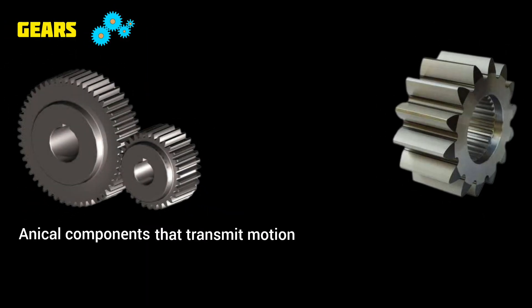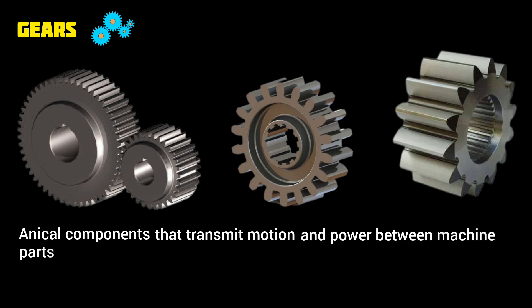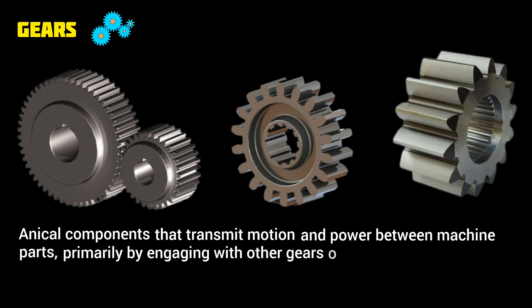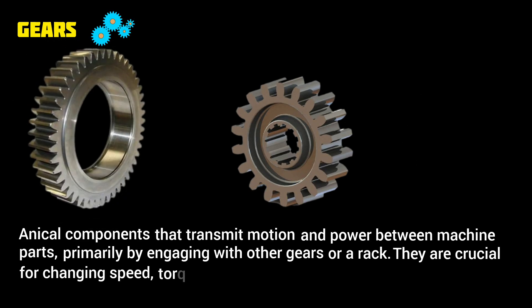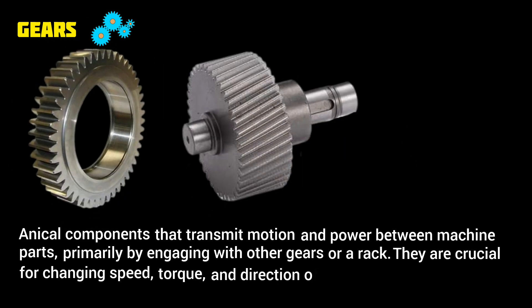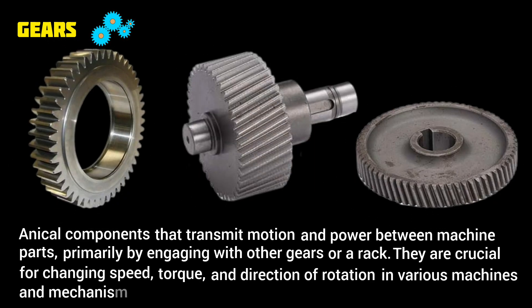Gears are mechanical components that transmit motion and power between machine parts, primarily by engaging with other gears or a rack. They are crucial for changing speed, torque, and direction of rotation in various machines and mechanisms.